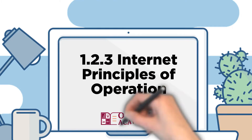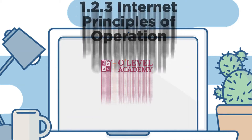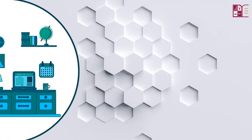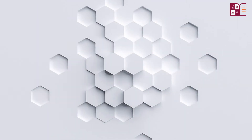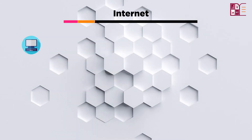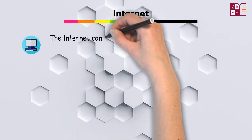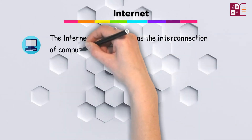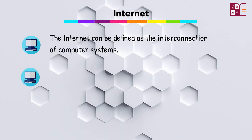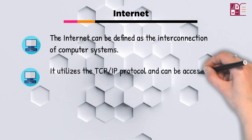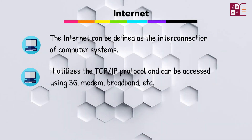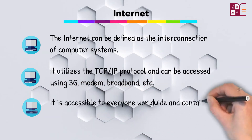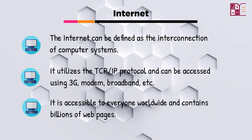Internet Principles of Operation. The internet can be defined as the interconnection of computer systems. It utilizes the TCP/IP protocol. It can be accessed using a 3G modem, broadband, etc. The internet is accessible to everyone worldwide and contains billions of web pages and tons of information.